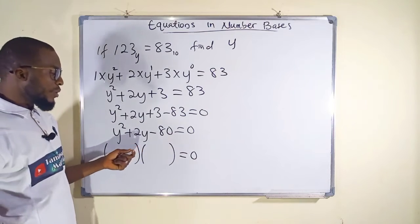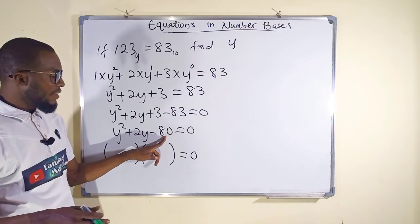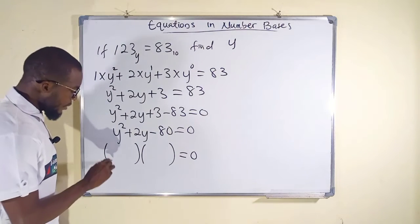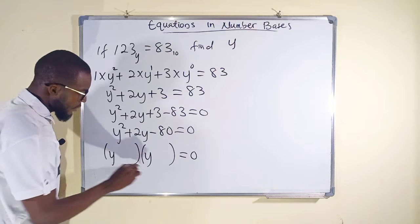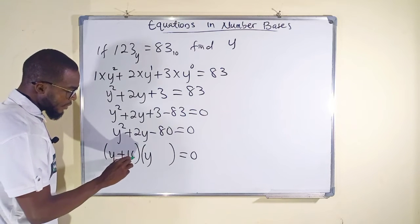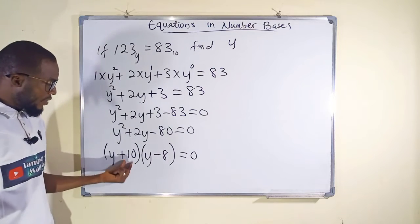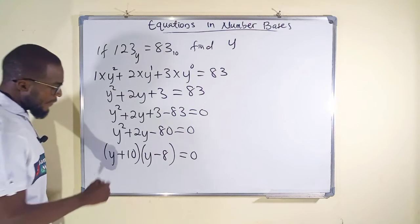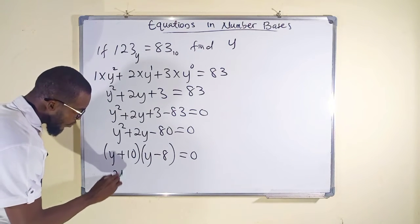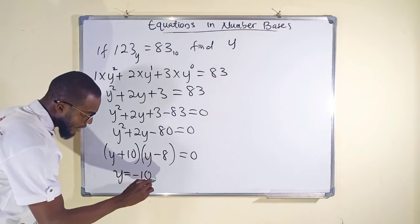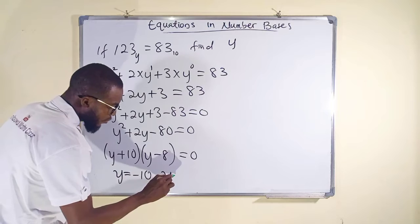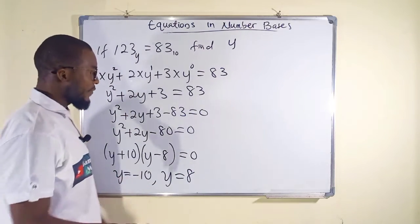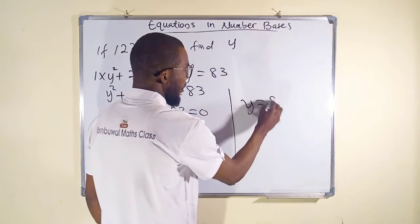We need two numbers that multiply to negative 80 and add to positive 2. Those numbers are positive 10 and negative 8. Setting each factor to zero: y + 10 = 0 gives y = negative 10, and y minus 8 = 0 gives y = positive 8. Since y is our base and cannot be negative, y equals 8 is our answer.